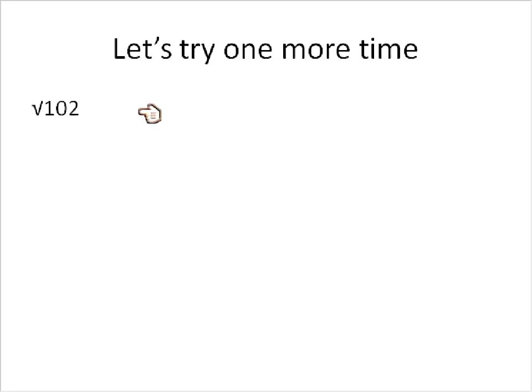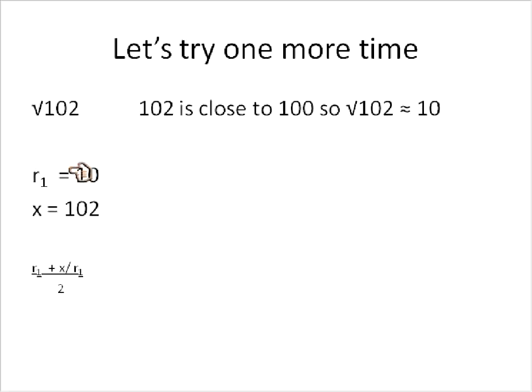Let's try one more. The square root of 102. 102 is pretty close to 100, so I'm just going to guess that it's about 10. The square root of 100 is 10, so the square root of 102 is about 10. I don't have to put a decimal on it. Let's just keep things easy. We're going to guess at about 10. So that's my guess, 10. X is my original number of 102.